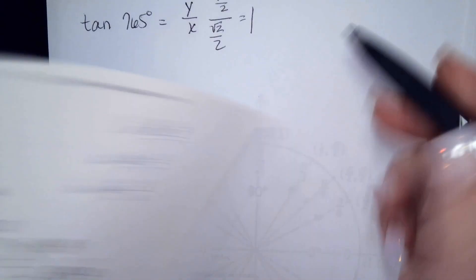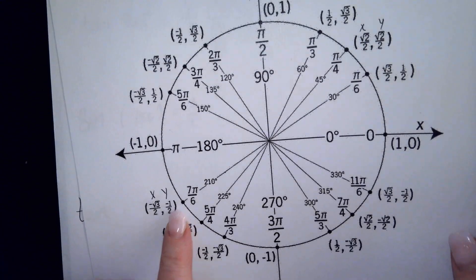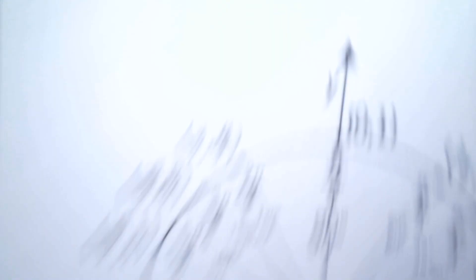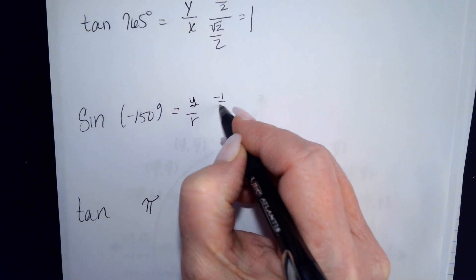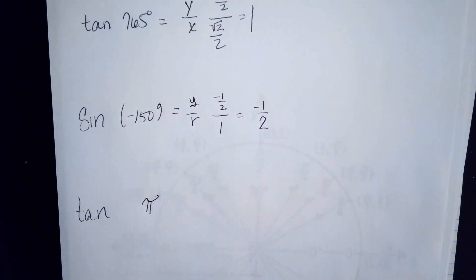And I'm looking for the sine. Well, once again, sine is y over r. And at that particular location, my y value is negative 1 half. My r value is equal to 1. So that is negative 1 half.